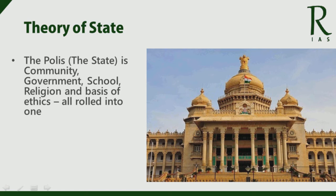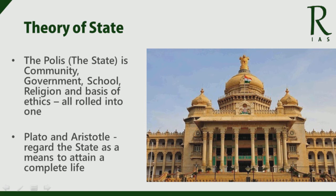Both Plato and Aristotle regard the state as a means to attain a complete life — a life of not just basic needs but also to perform more elevated aims essential for a good life. This complete life includes not just basic needs like food, shelter, water but also to perform more elevated aims essential for a good life.